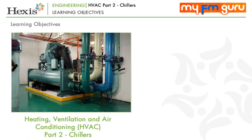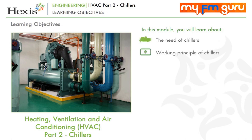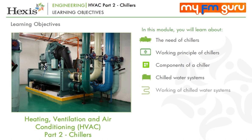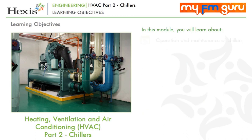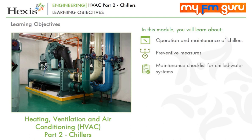Let's take a look at the learning objectives of this module. By the end of this module, you will be able to: understand chillers and why we need them; explain the working principle of chillers; list the components of chillers; understand chilled water systems; explain the working of chilled water systems; list the components of chilled water systems; name the manufacturers of chillers, cooling towers and pumps; explain the operation and maintenance of chillers; understand the preventive measures that should be taken for chillers; list the maintenance checklist for chilled water systems; explain the impact of chillers and chilled water systems on businesses; and list the top 5 issues and troubleshooting tips.